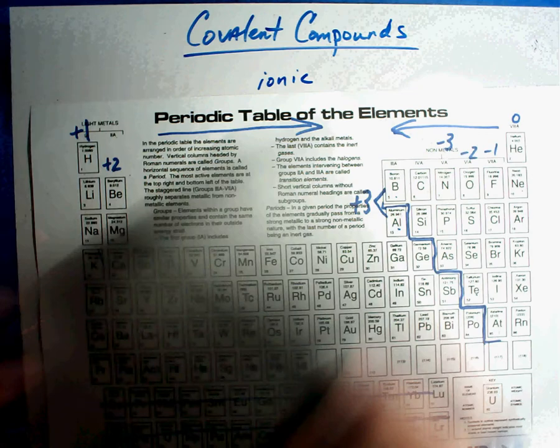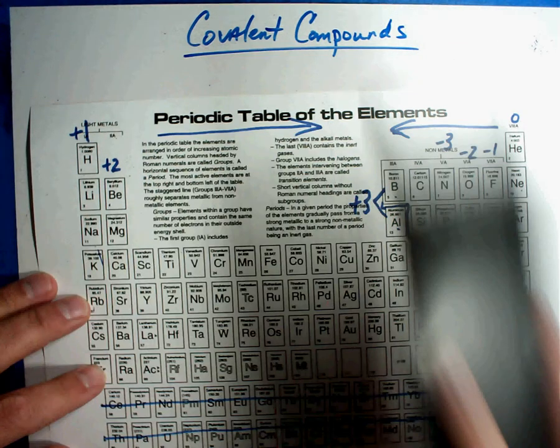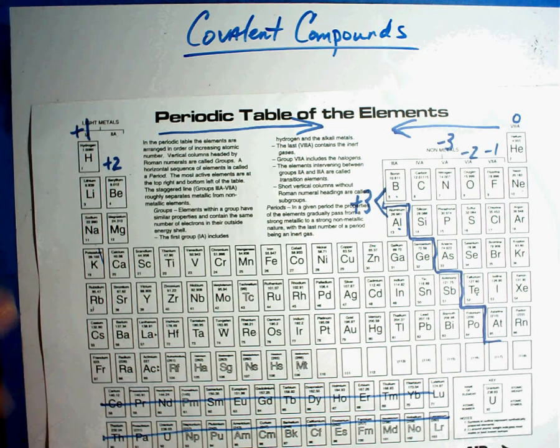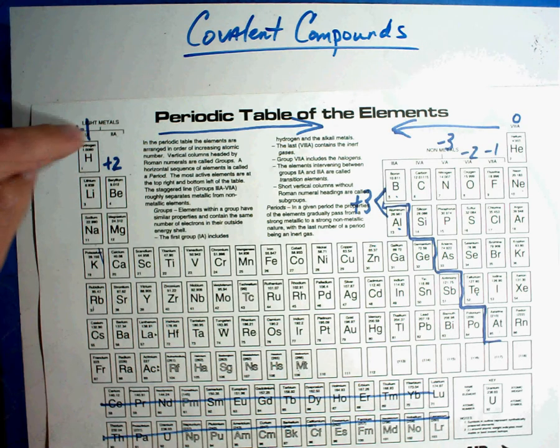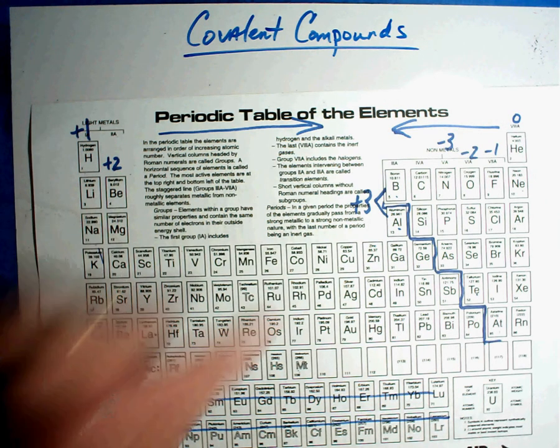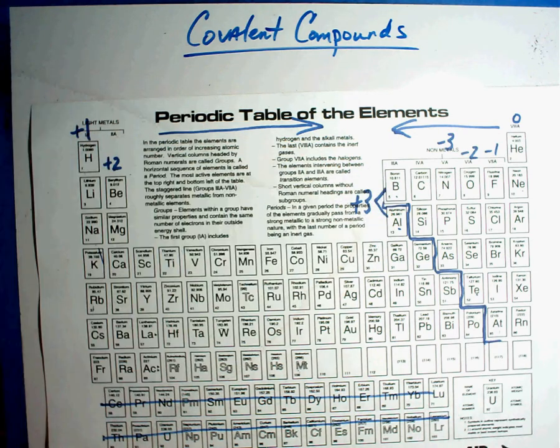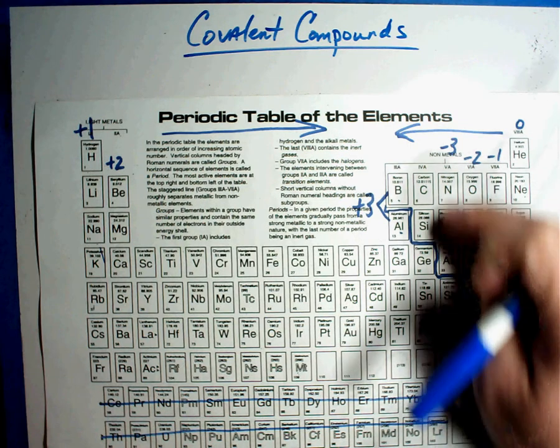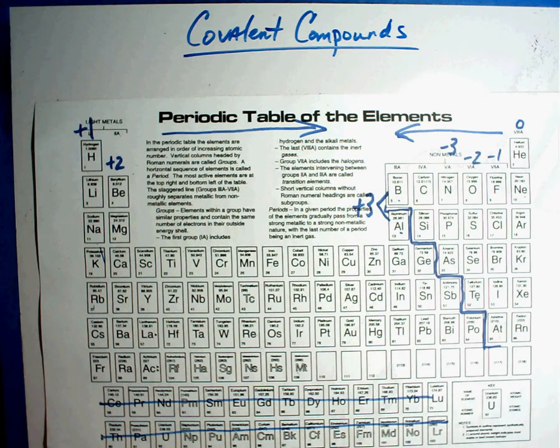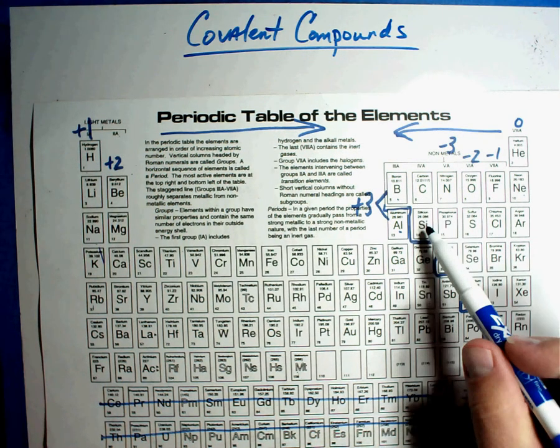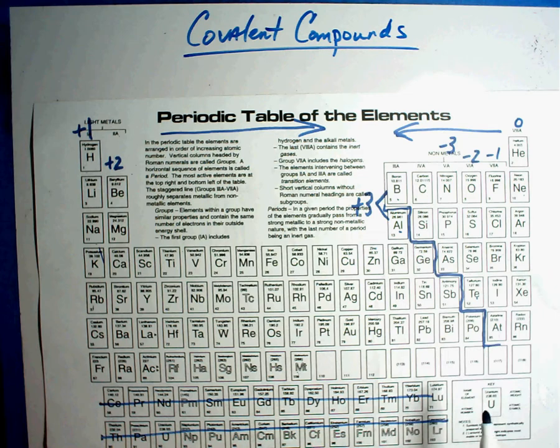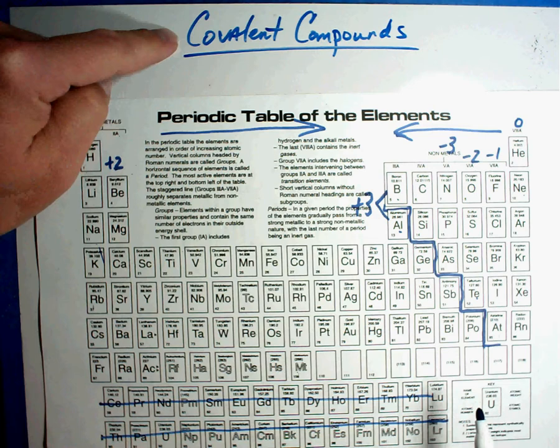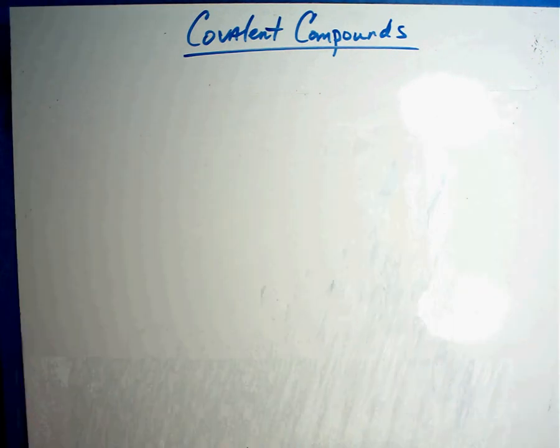But today, we're going to talk about something different. We're going to talk about covalent compounds. Now, just a quick reminder, you can tell by looking at the chart, everybody in this column is plus 1, everybody in this column is plus 2. These two guys were plus 3. 0 and negative 1 and negative 2 and negative 3. We figured out their charges because of what they wanted to do with their electrons. But we skipped carbon and silicon. Let's talk about those guys today because they are covalent compounds.